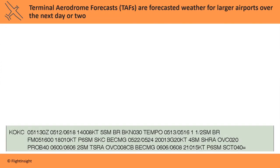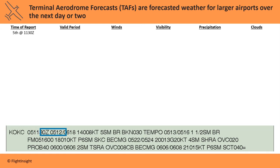Observations are for current conditions, but forecasts predict weather into the future. A Terminal Aerodrome Forecast, or TAF, looks at predicted weather for the next day or two for a larger airport. Here's a TAF for Oklahoma City. The report was issued on the 5th of the month at 1130 Zulu. The forecast is valid for the period from the 5th at 1200 Zulu through the 6th at 1800 Zulu, so it's a 30-hour valid period.